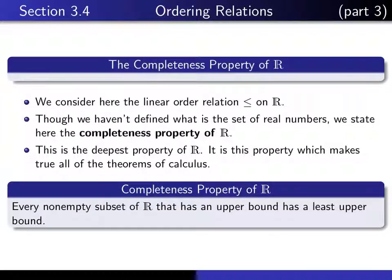So here it is. It's a very innocent-looking statement. It says every non-empty subset of the reals that has an upper bound has a least upper bound. That's all the completeness property says.